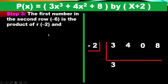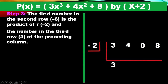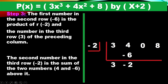Step 3: The first number in the second row, which is −6, is the product of r (−2) and the number in the third row of the preceding column (3). So 3 times −2 equals −6. The second number in the third row is −2, which is the sum of 4 and −6. That is, 4 + (−6) = −2.